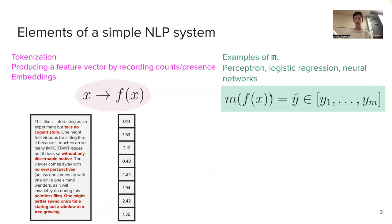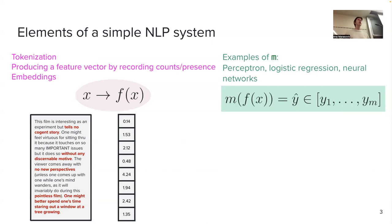We've essentially finished our story about the elements of a simple NLP system: we wanted to build a classifier, found ways to represent input text, talked about tokenization and embeddings, how to average embeddings, and then put this into a neural network whose parameters we learn from data. You also have evaluation metrics — precision, accuracy, recall, F1 — which you used in the first assignment. That's the full picture.